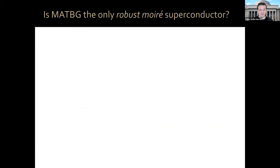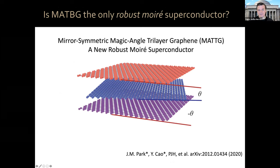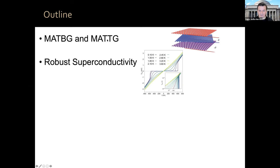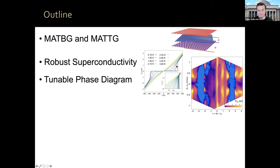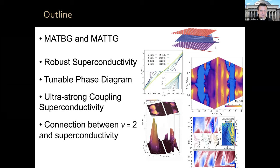This naturally leads to the question: is magic angle twisted bilayer graphene the only robust moiré superconductor? What I'm going to tell you today is that the answer is no. I'm going to present another robust moiré superconductor: mirror-symmetric magic angle twisted trilayer graphene. I'll first introduce MATBG and MATTG, then tell you about our observation of robust superconductivity, how tunable the phase diagram is, our observation of ultra-strong coupling superconductivity, the deep connection between the nu equals two state and superconductivity, and then a summary and outlook.